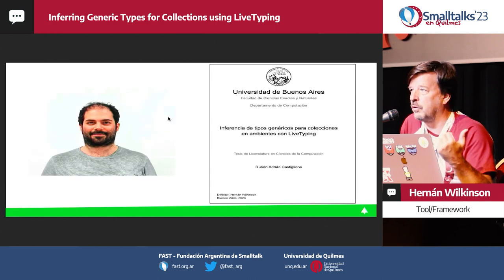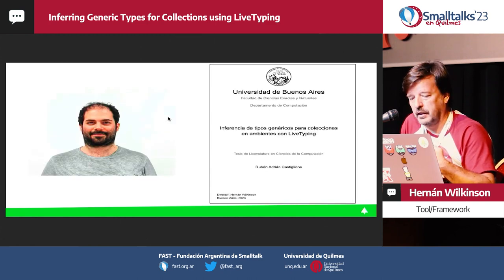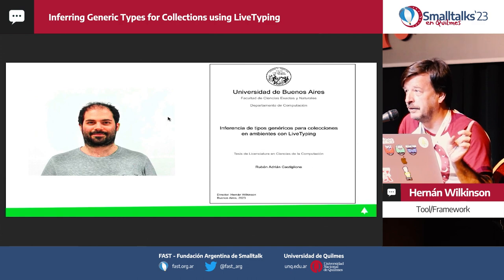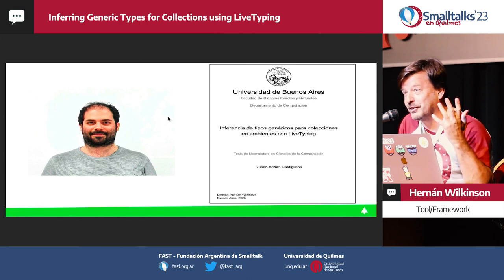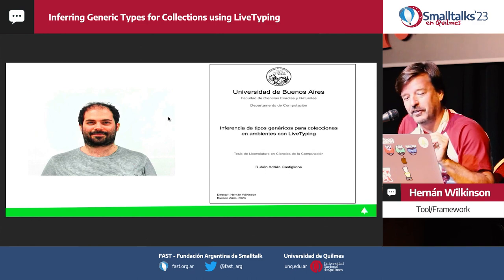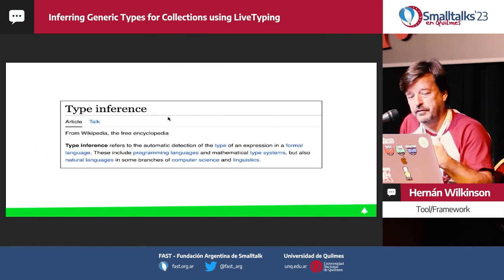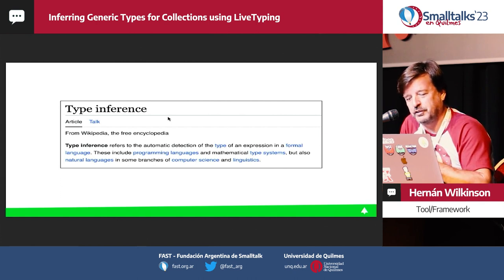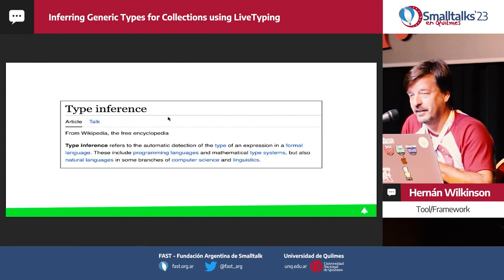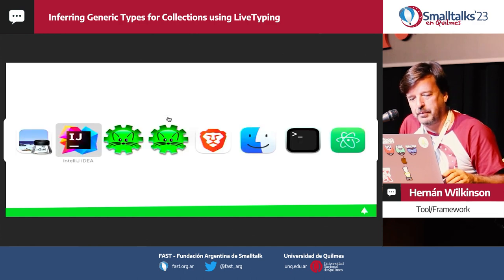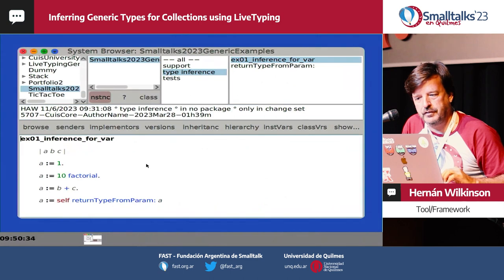That's the work that Adrian Castiglione did and presented as his thesis this year. The idea is that we use type inference. Type inference refers to the automatic detection of the type of an expression in a formal language — thanks Wikipedia. So just a quick example: if we're in Smalltalk and we assign 1 to a variable, the simplest case is you can say that a is of type SmallInteger, because you already know you're assigning an integer to it.